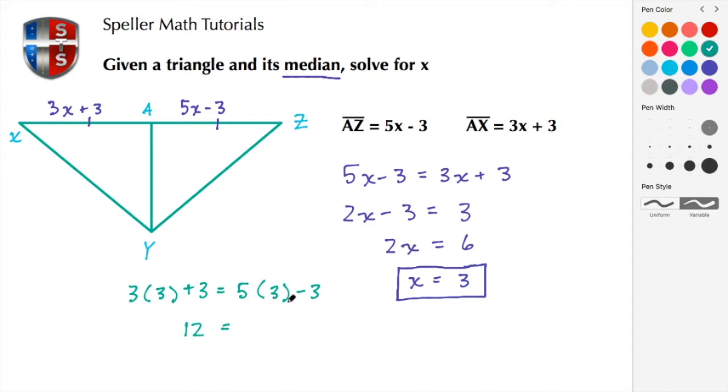And on the right-hand side, we have 5 times 3 which is 15, and 15 minus 3 is also 12. So here we see that the length of each side is 12, and that also verifies our answer because they come out to be the same.